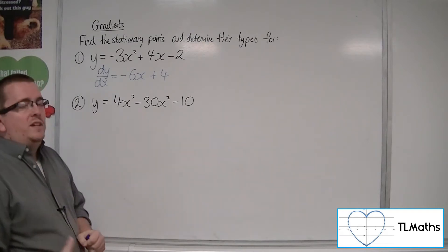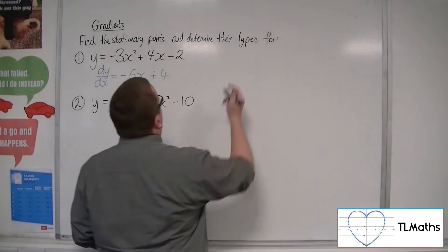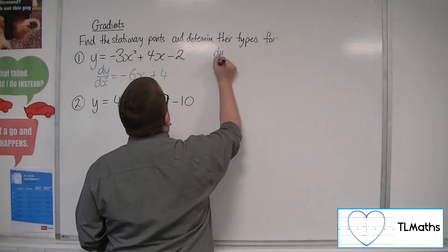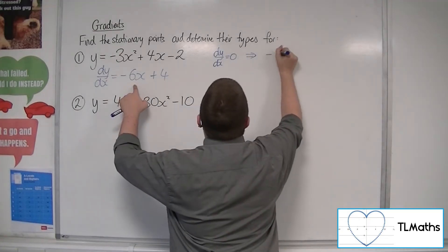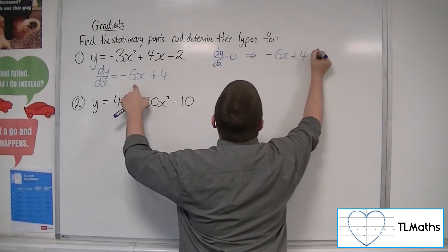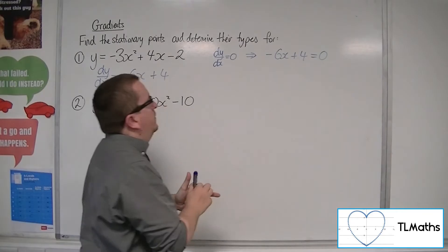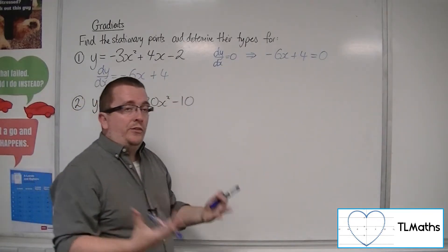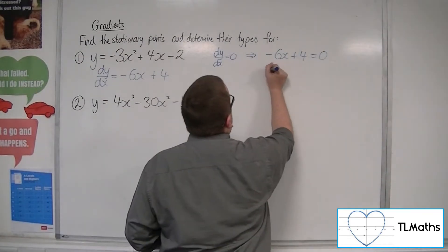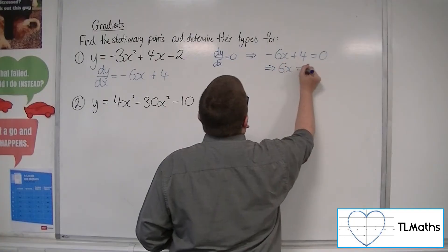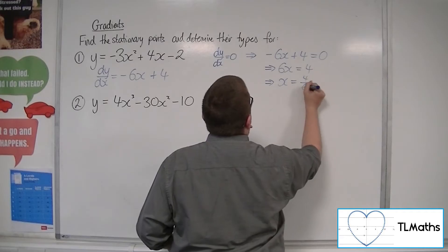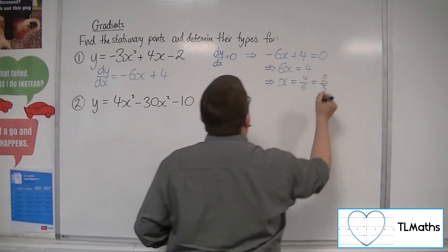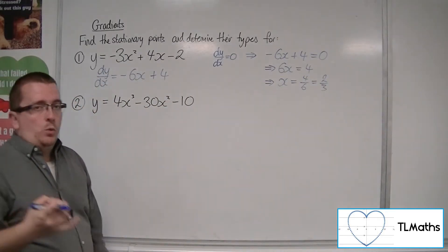We can identify the stationary points by putting dy by dx equal to 0. So this minus 6x plus 4 will be equal to 0. Then we need to solve that equation. So 6x will be equal to 4. Divide both sides by 6, x is 4 sixths or 2 thirds. That's the x-coordinate.